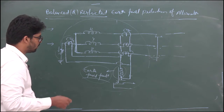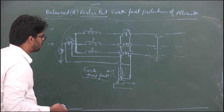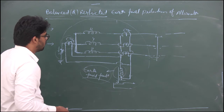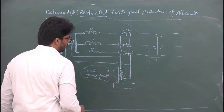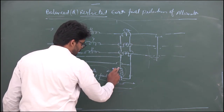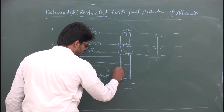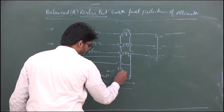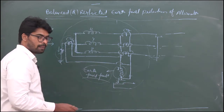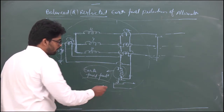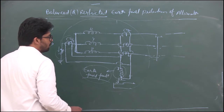This is the fault section we need to protect. Whenever there is a flowing current in this relay coil, the relay will get operated. So for example, if a fault occurs externally — let's say there is a phase-to-earth fault occurring externally.